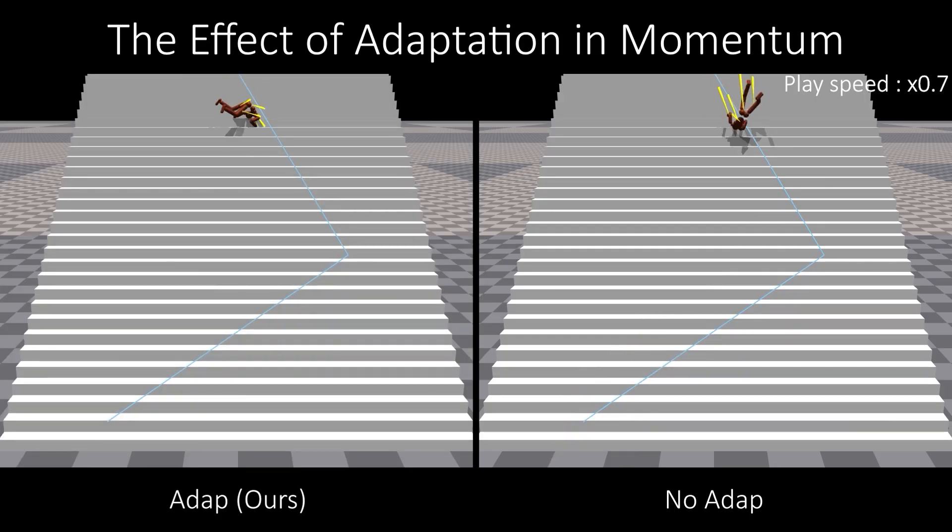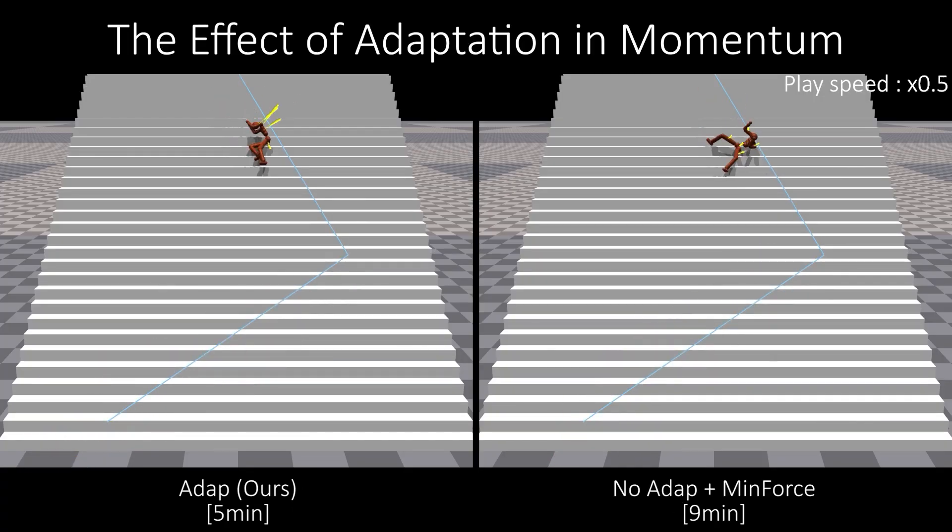Additional experiments are conducted with a min-force setting, where a force-minimizing term is added to the reward function. Adding the minimizing force term to NOADAP reduces floating to some extent, but fails to eliminate it entirely. Especially, the generated motion near the sharp turn remains very unnatural.